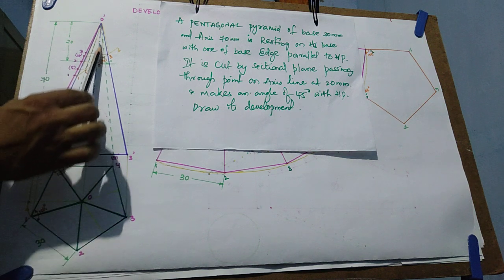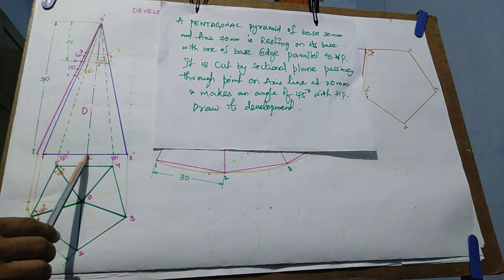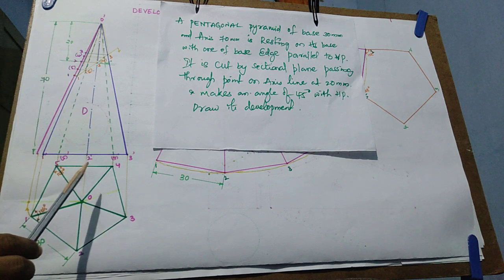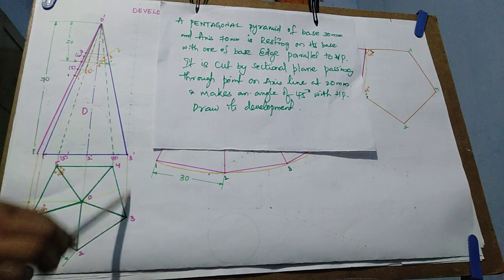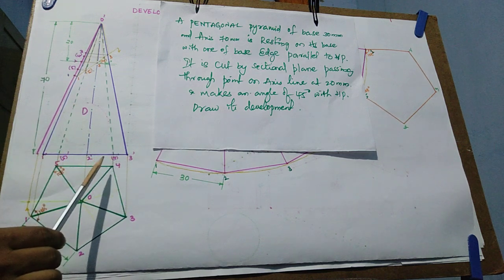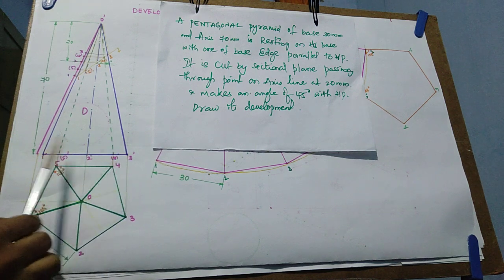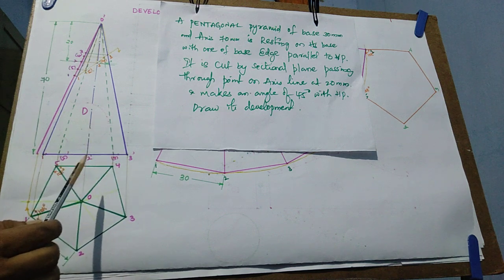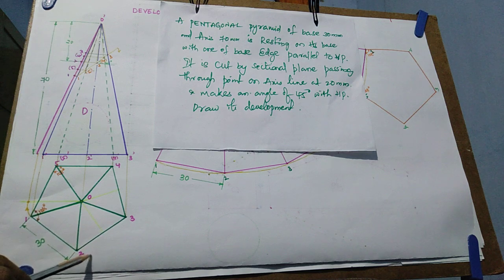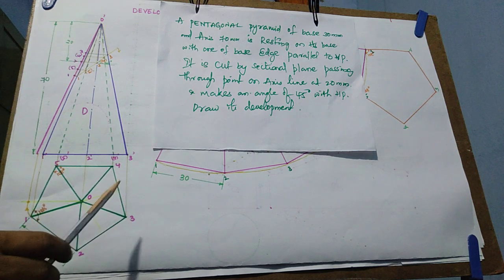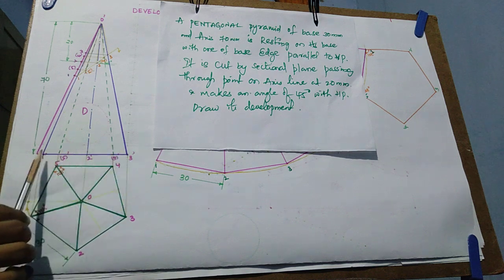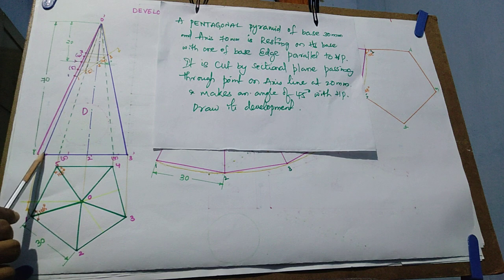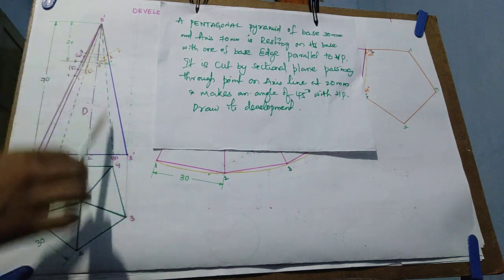The length of the axis line is given as 70 mm. Take the axis line length of 70 mm, and from all five corner points project lines to the axis line. From corners one, two, three, four, and five you get the projection lines joining on the axis line. This is the base, so you join here in the front view direction. Corners one, two, and three are visible and four and five are not visible. Join all the projection lines to the apex point, as it is a pyramid.